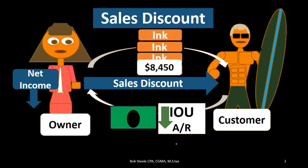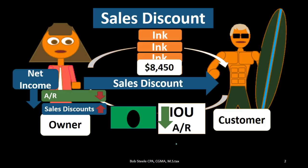Why does net income go down? When we recorded the sale we recorded it at the full sales price, and now we're going to give a discount and reduce that. For the journal entry, accounts receivable is going to go down because we're going to receive less money. Then the sales discount account is going to go up. The sales discount acts like an expense but it's more of a contra revenue account. It goes up and that brings down net income.